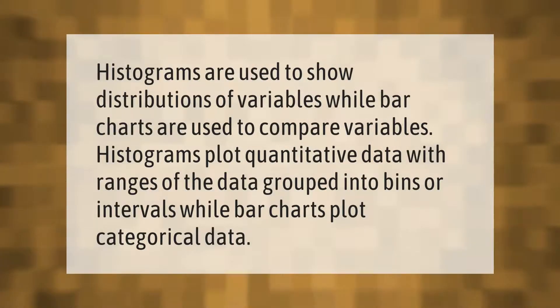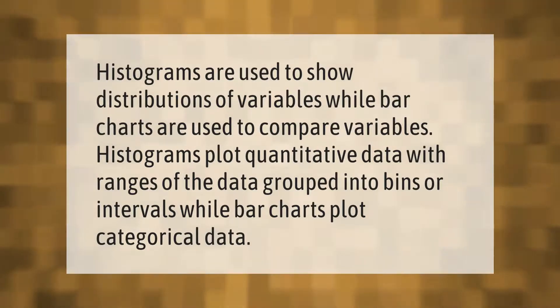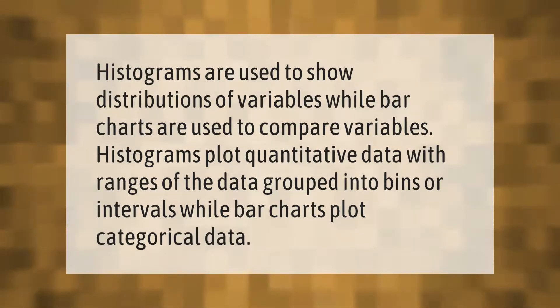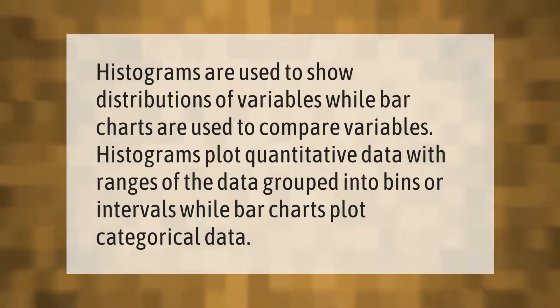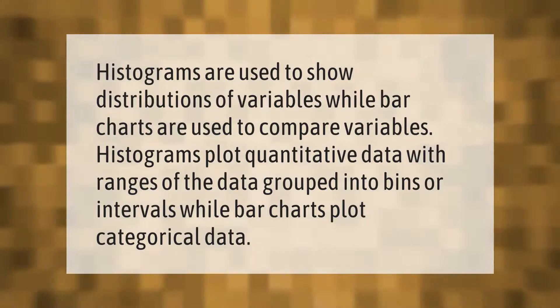Histograms are used to show distributions of variables, while bar charts are used to compare variables. Histograms plot quantitative data with ranges of the data grouped into bins or intervals, while bar charts plot categorical data.